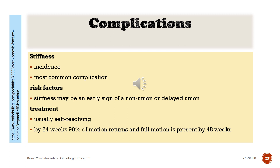Complications — Stiffness: most common complication. Stiffness may be an early sign of non-union or delayed union. Treatment: usually self-resolving; by 24 weeks 90% of motion returns, and full motion is present by 48 weeks.